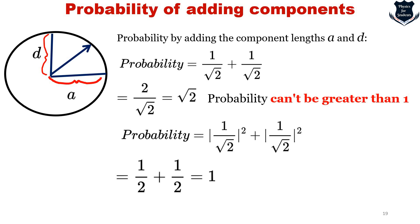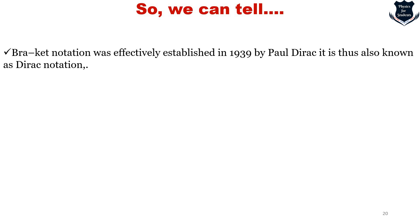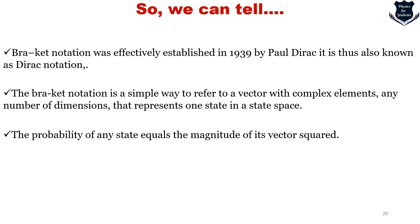What we can tell is that the Bra and Ket notation was established in 1939 by Paul Dirac, also known as Dirac notation. The Bra and Ket is a simple way to refer to a vector with complex elements of any number of dimensions that represents one state in a state space. The probability of any state equals the magnitude of its vector squared. This is the lesson - we understood how to use the Bra and Ket notation, and most importantly how it affects orthonormal basis.